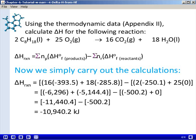The next thing we'll do is simply carry out the calculations. We have all the data that we need, and we've got a balanced equation that gives us all the stoichiometric coefficients. Be very careful with signs in a calculation like this. It looks pretty simple, but it's very easy to make an error with signs, especially when you have negative quantities that are being subtracted. So be very careful with signs. In this case, the final answer that we get is negative 10,940.2 kilojoules.